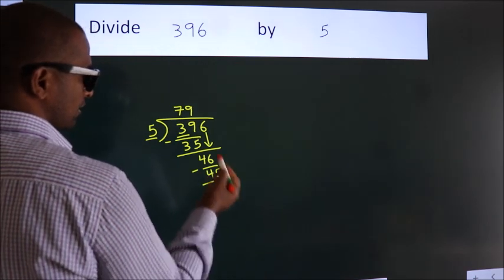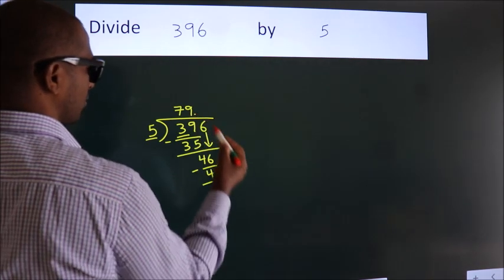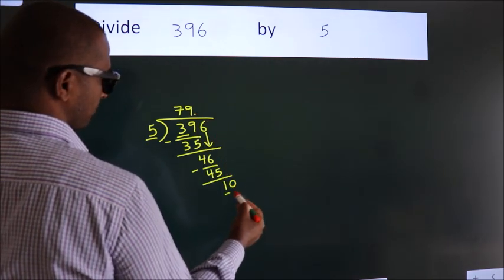After this, no more numbers to bring down. So what we do is, we put a dot, take 0. So 10.